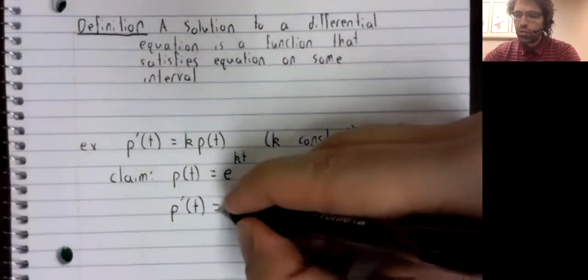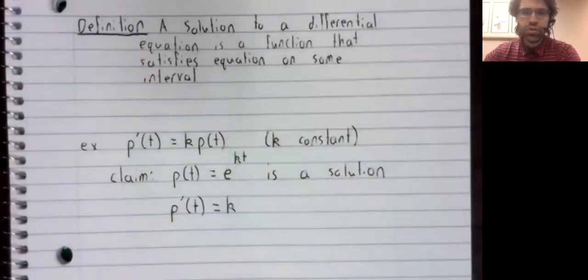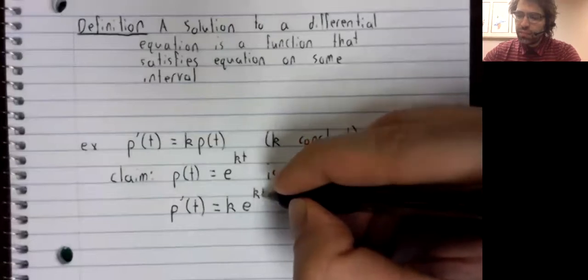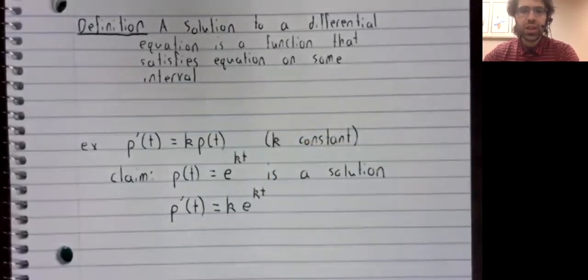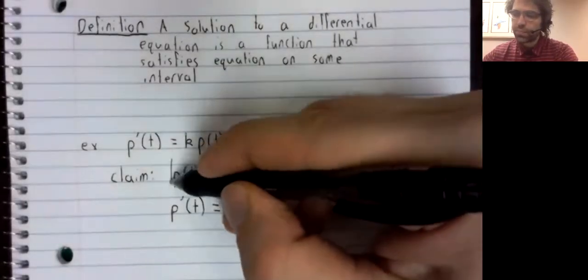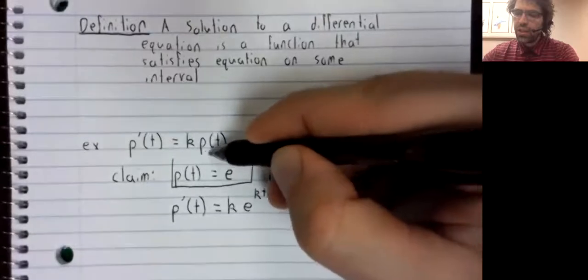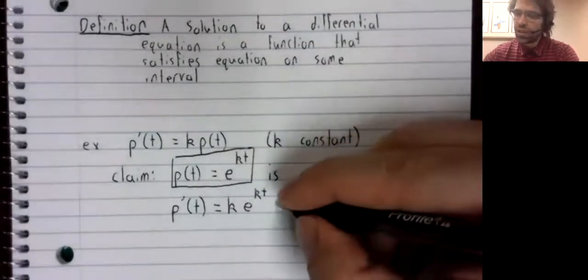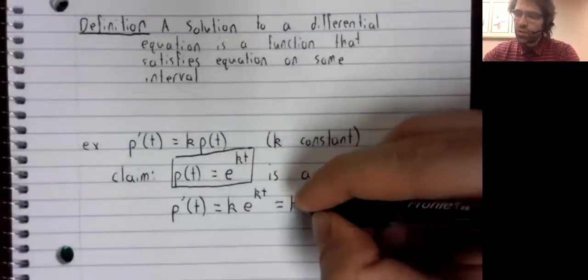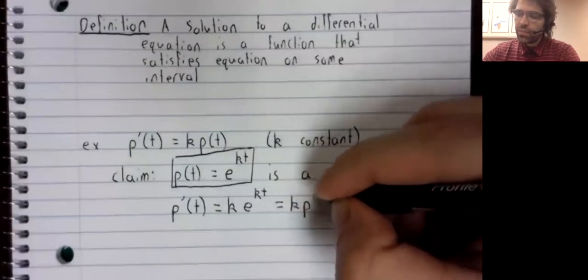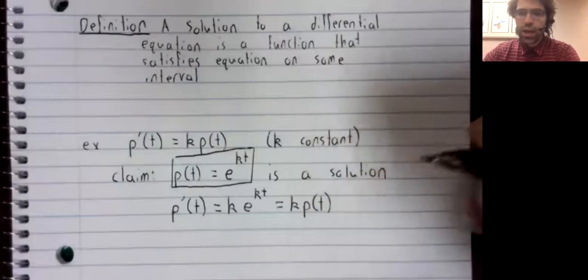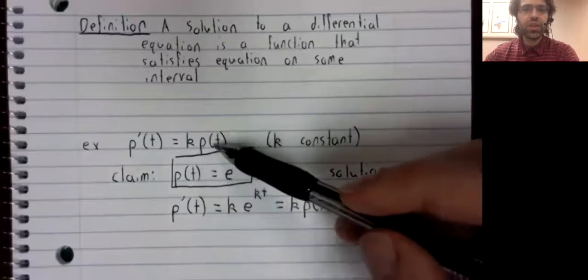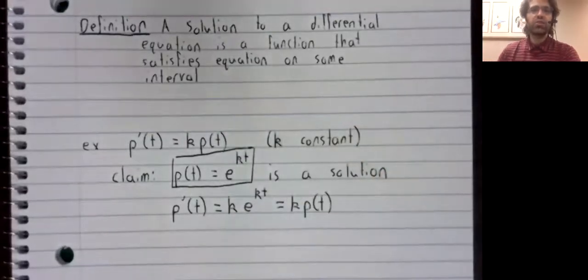The derivative, using the chain rule, is k times e^(kt). And e^(kt) equals p(t). So this is k times p(t). Just as we claim, this is a solution.